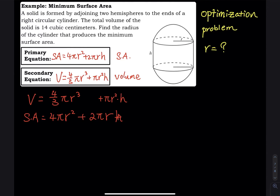So the surface area equation is SA = 4π r² + 2πrh. The primary equation has two variables, r and h. Since the problem asks us to find r, we have to eliminate h. We need to keep r, because at the end of the day we need to report what r is.